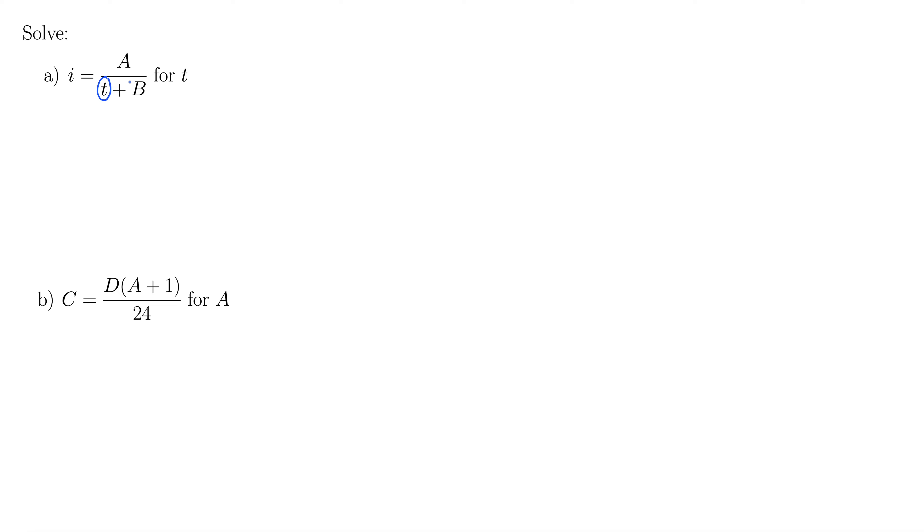Now technically we're supposed to take the LCD, which is just this denominator here, multiply both sides by it. That's being very formal. In reality, what you do when you have a situation like this is you just take this denominator and multiply it up to the other side. That's what we do in practice. Technically we're multiplying both sides by the LCD, but in practice you just multiply up like this. What does that look like? Well, that gives us i times t plus B equals A.